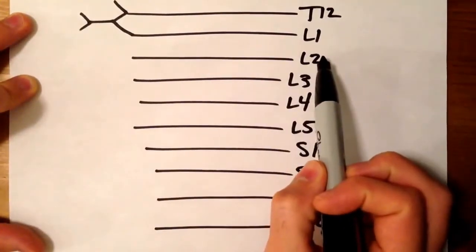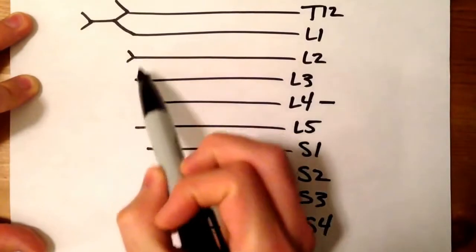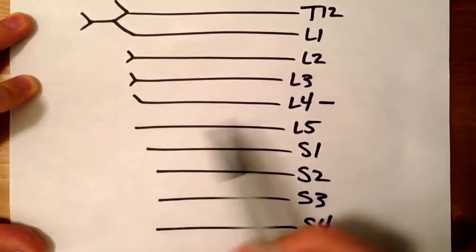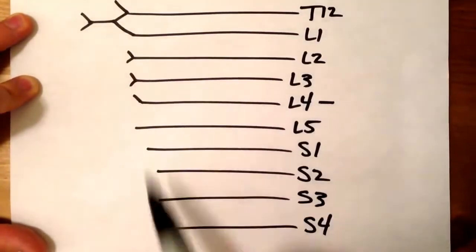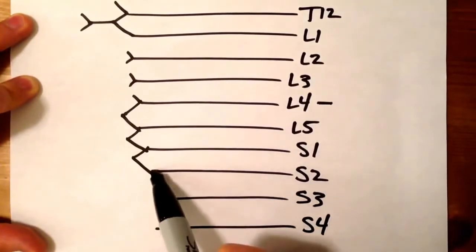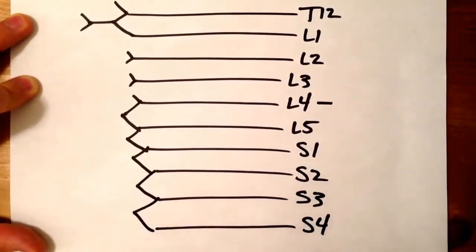And then from L2 to L4, we're going to make these little V projections. From L4 and L5 and down, we're going to connect those to each other, like little mountain peaks.